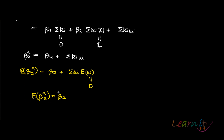So what you have proved is that β₂̂ is an unbiased estimator of β₂.